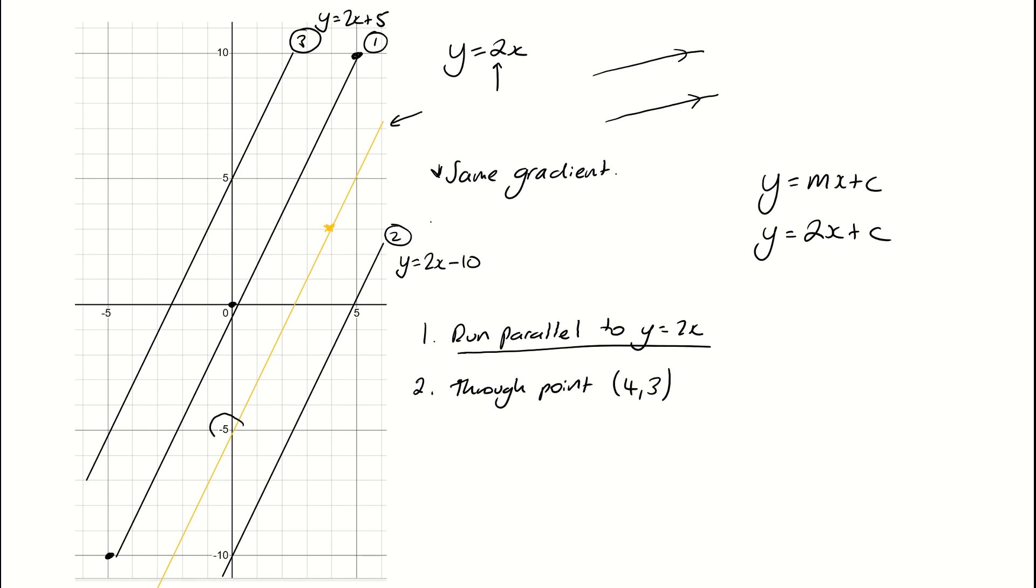Now, looking on the graph, I should hope that when I do the algebra, I get a c value of negative 5. But let's check. I use this point of information here, and I can pop that point into my new equation. So I get that 3 needs to be 2 lots of 4 plus c. So 3 is equal to 8 plus c. So c has to be negative 5, which is what I saw when I drew that yellow line in.